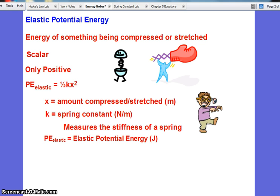Energy, just like work, is a scalar. It has no direction. In this case, the elastic potential energy is only positive. Unlike work, which can be negative as well, elastic potential energy is always a positive value, whether it's compressed or stretched. Our equation is that the elastic potential energy is one-half what we call the spring constant, measured in newtons per meter, times the amount compressed or stretched squared.